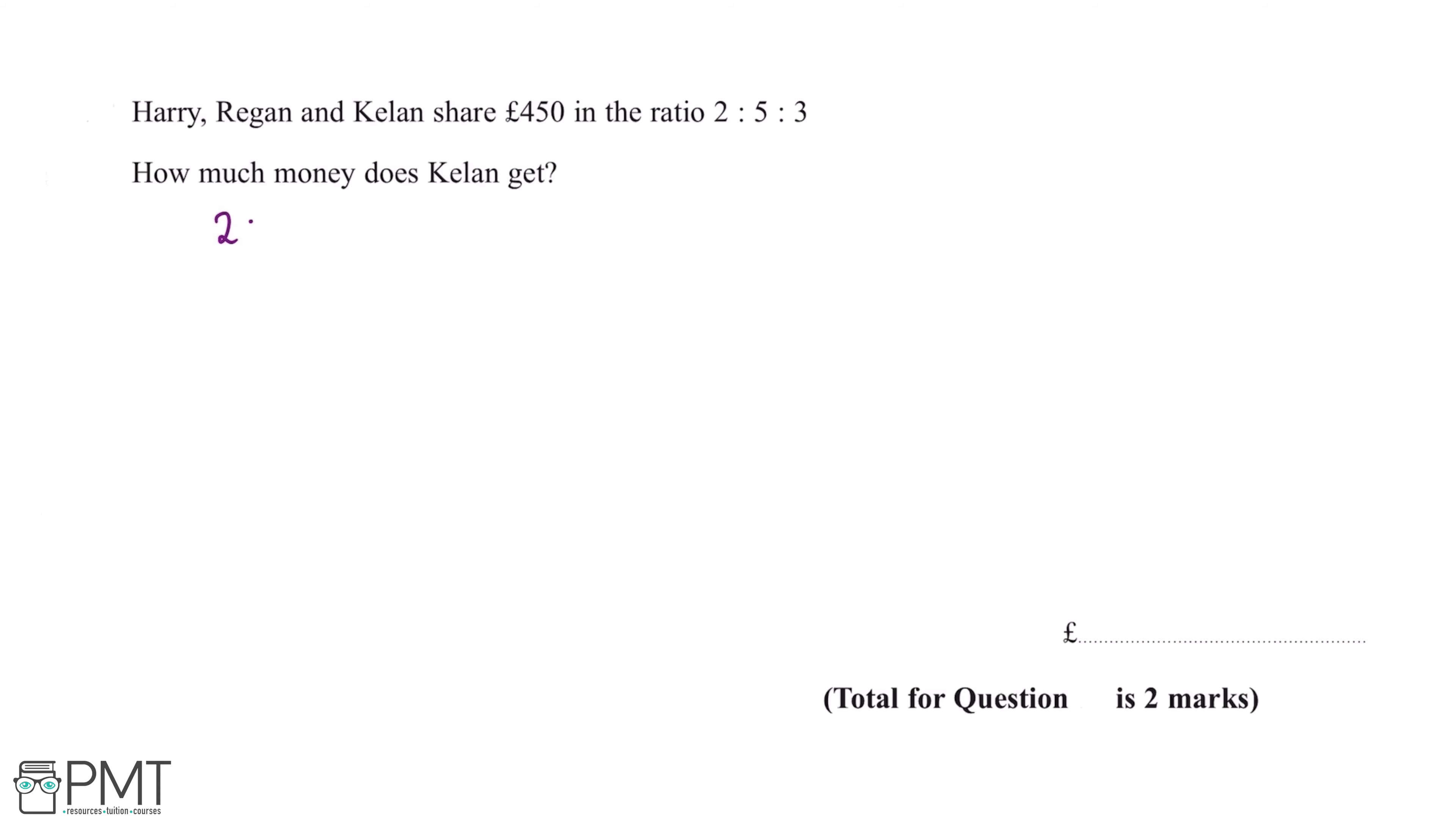The ratio is 2 to 5 to 3, and it's Harry to Regan to Keelan. In order to work out this ratio we want to add together this 2, 5 and 3. So 2 plus 5 plus 3 is equal to 10.